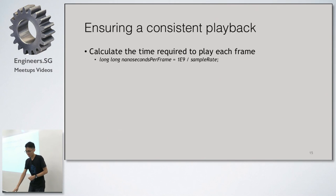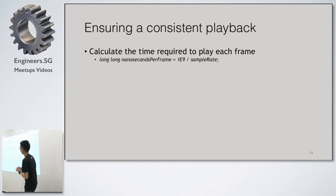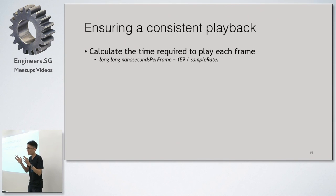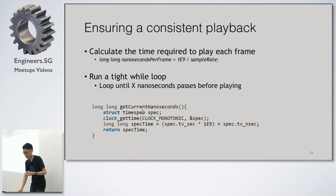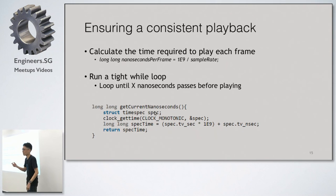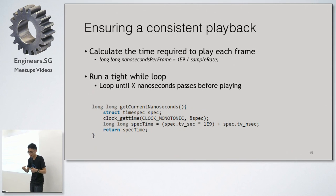To ensure consistent playback, I calculate the time required per frame: 1,000,000,000 nanoseconds divided by the sample rate gives the duration per frame. I run a tight while loop where every iteration gets the current system time in nanoseconds — Linux has an API for this. I keep spinning until 22 microseconds have passed, then play the next frame.